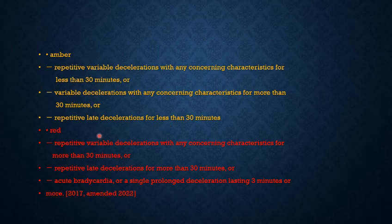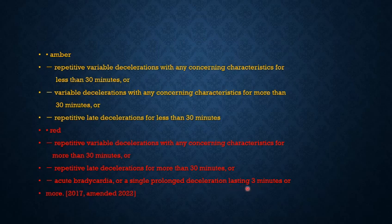Red or abnormal findings are: repetitive variable decelerations with any concerning characteristic for more than 30 minutes, or repetitive late decelerations for more than 30 minutes, or acute bradycardia, or a single prolonged deceleration lasting three minutes or more. If any of these three are present in a CTG, it is considered an abnormal or red finding according to the new updated guideline.